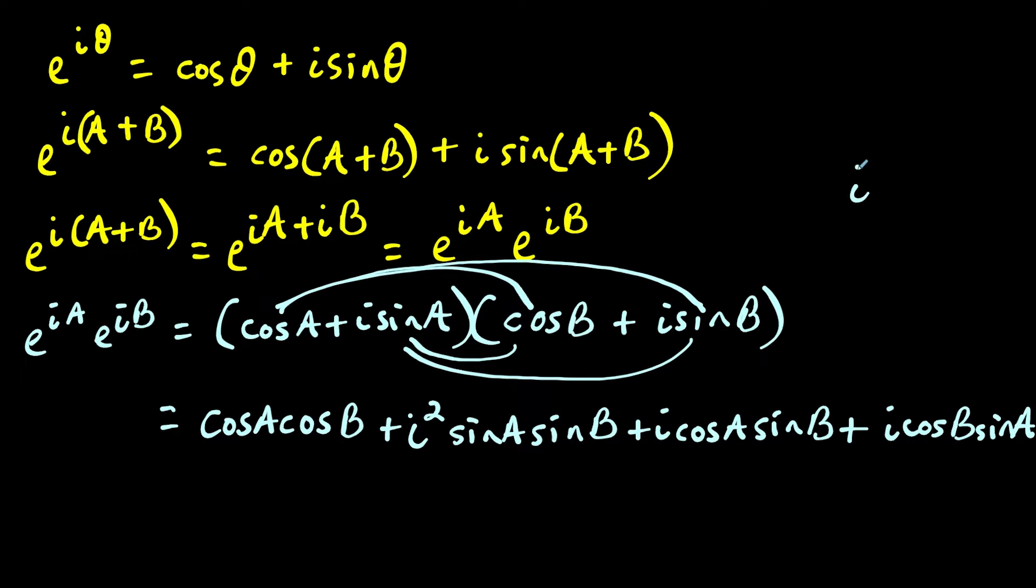So now one thing to be mindful of is that i squared is equal to negative one. So in the next line, we could rewrite this as cosine a cosine b plus negative one, or I could just say minus sine a sine b. So now we could factor out a common i from the last two terms, and we'll have i times cosine a sine b plus cosine b times sine of a.